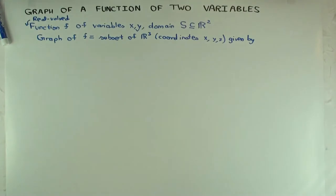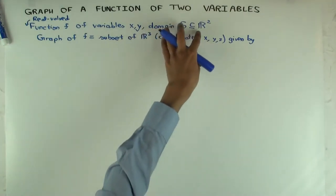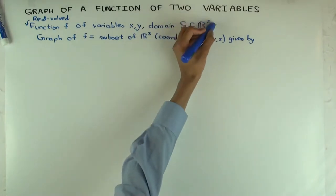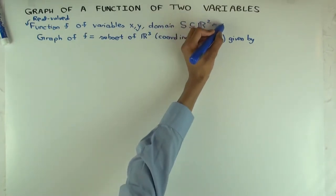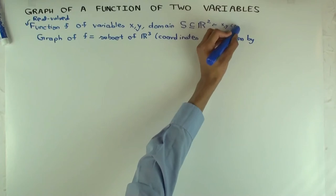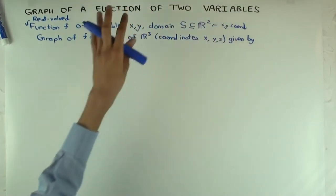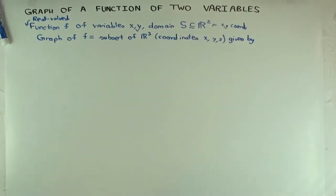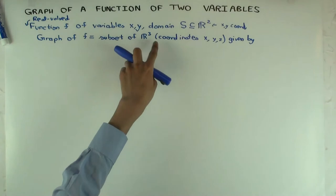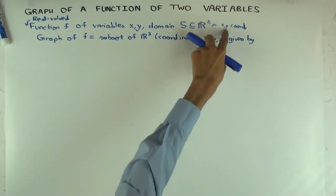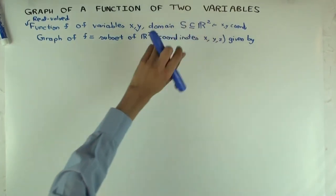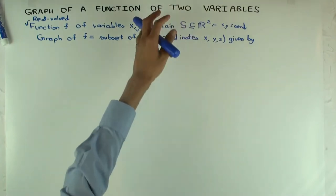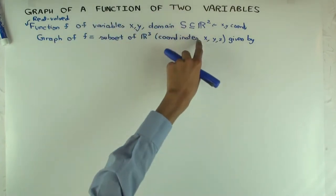And the domain is some subset of R², so R² is just coordinatized by x and y, and the domain need not be all of R²—it's just some points in R². Now the graph of f is the subset of R³ with coordinates x, y, z, so these x and y are just the same x and y which cover the domain of f, and the z is a new thing.